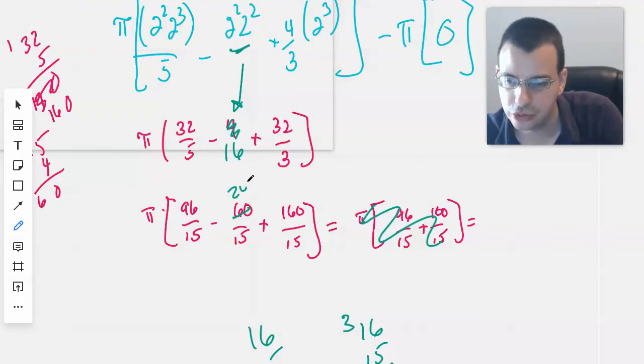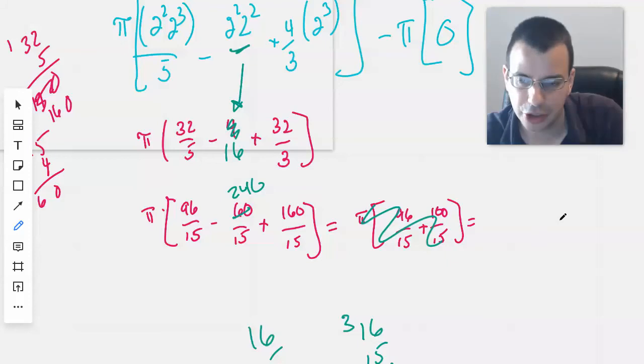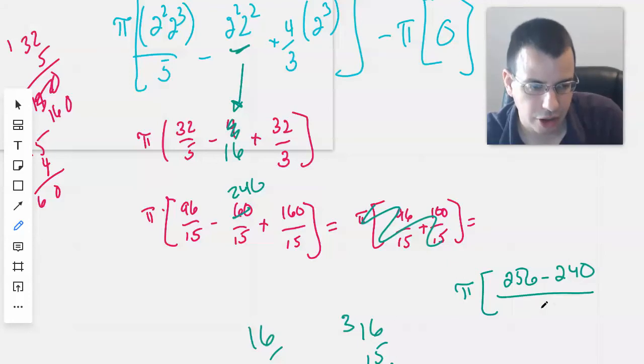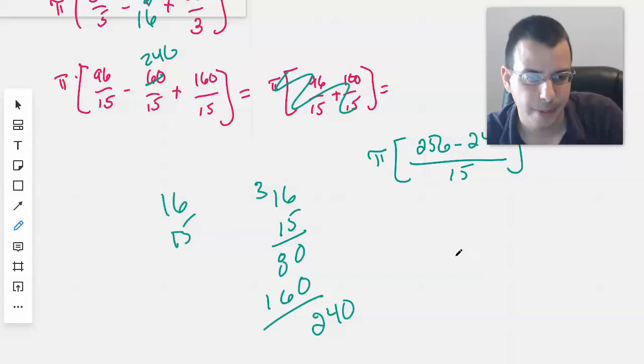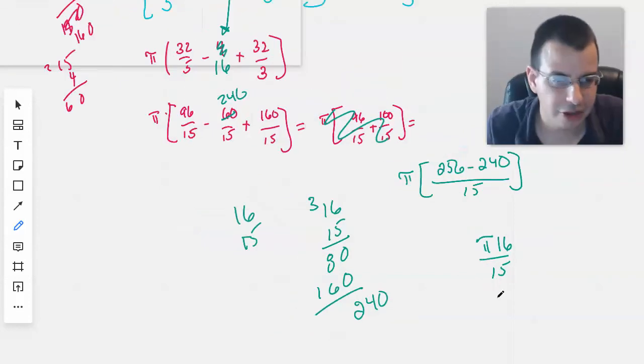So, this is 240. And so, we're left with... Um... So, then we'll do this as pi times... That's 256. 256 minus 240 all over 15. Which then gives us pi 16 over 15. Okay. That looks more reasonable.